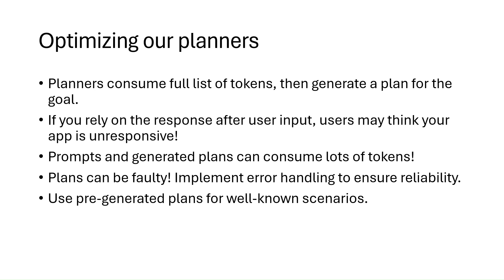If we rely solely on the planner's response after a user provides input, they may assume that the application is unresponsive, since this is going to take some time. You might want to consider providing feedback to the user from the model while they wait. Prompts and generated plans also consume a significant number of tokens, which can be expensive in terms of performance and cost. The large language model needs to support higher token counts to generate plans, so you may want to either use predefined plans for common scenarios or adjust your functions to support fewer tokens. Planners can also generate faulty plans, so you need to implement robust error handling. For well-known scenarios, use pre-generated plans to avoid performance hits and increased costs, and you can store plans within your project to serve them to your users.